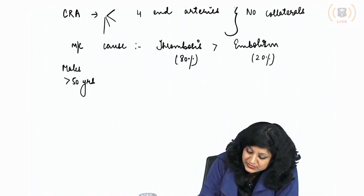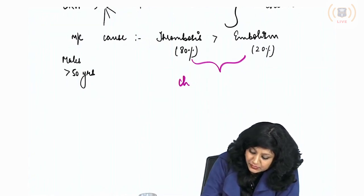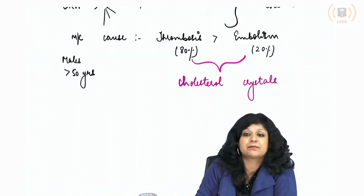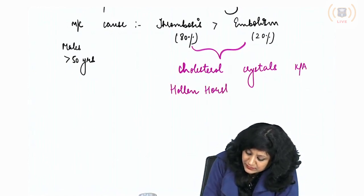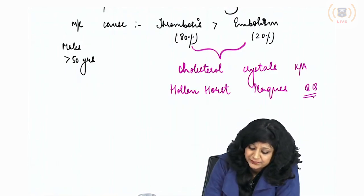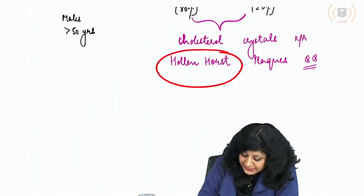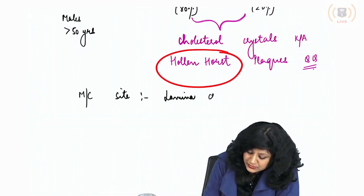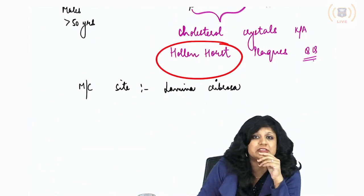This thromboembolism takes place mostly due to cholesterol crystals, which are called Hollenhorst plaques. This is a very important question. The most common site of occlusion is the lamina cribrosa — that part of the sclera through which the optic nerve fibers come out.